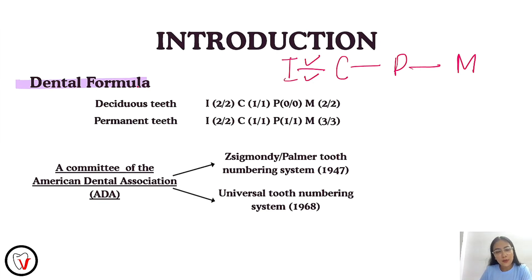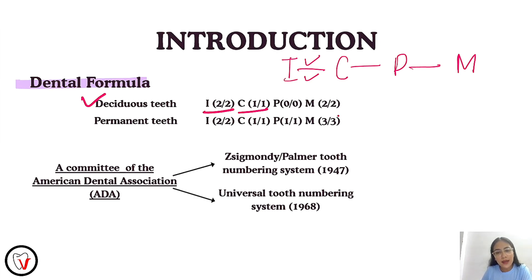The dental formula for primary or deciduous teeth should be read as: incisors — 2 maxillary, 2 mandibular; canine — 1 maxillary, 1 mandibular; and molars — 2 maxillary and 2 mandibular. There will be no premolar in the deciduous teeth.